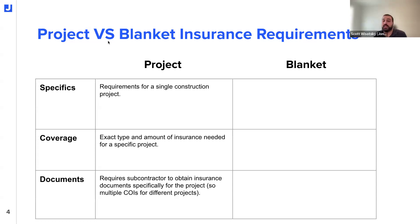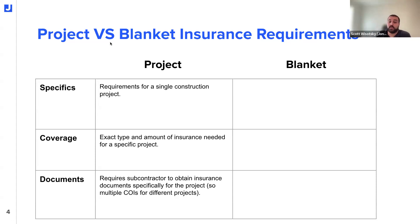The other set of insurance requirements we're discussing today are blanket insurance requirements. These can also be called annual — because subcontractors only need to update their insurance documents once per year, hence the word annual. A lot of teams think about them as global-level insurance requirements, because one set of insurance documents is all the subcontractor needs to be globally compliant across all projects.